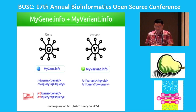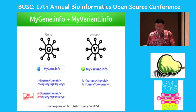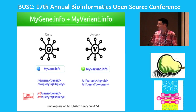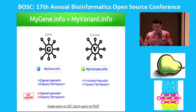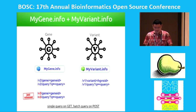For myvariant.info, which we created and released last year, we have a variant endpoint following the same pattern. You have a variant ID, you can query by the HGVS ID, you can do queries, and you can also do batch queries using POST.